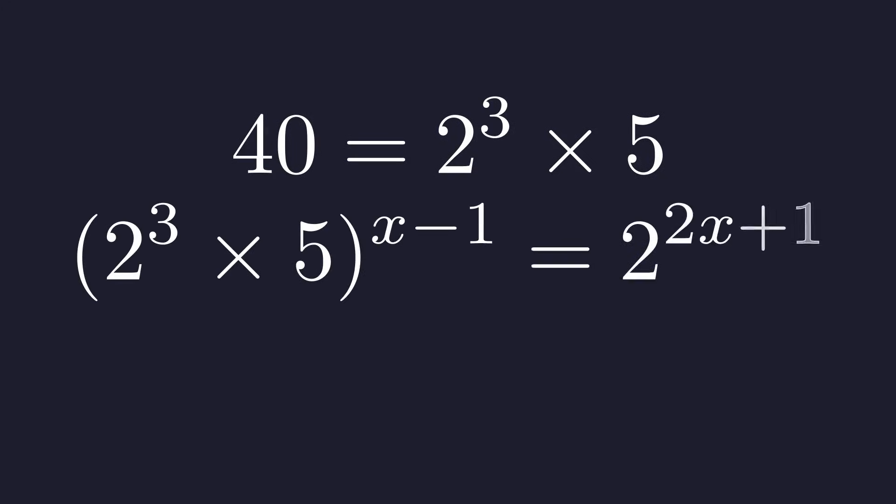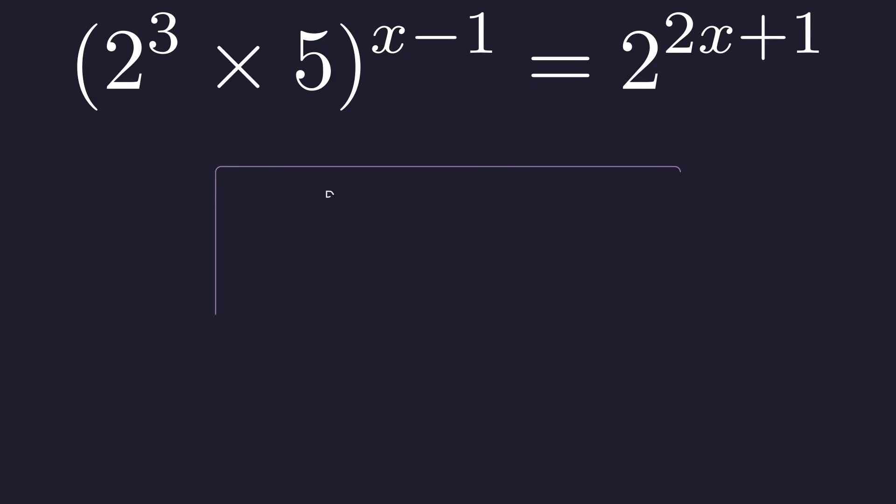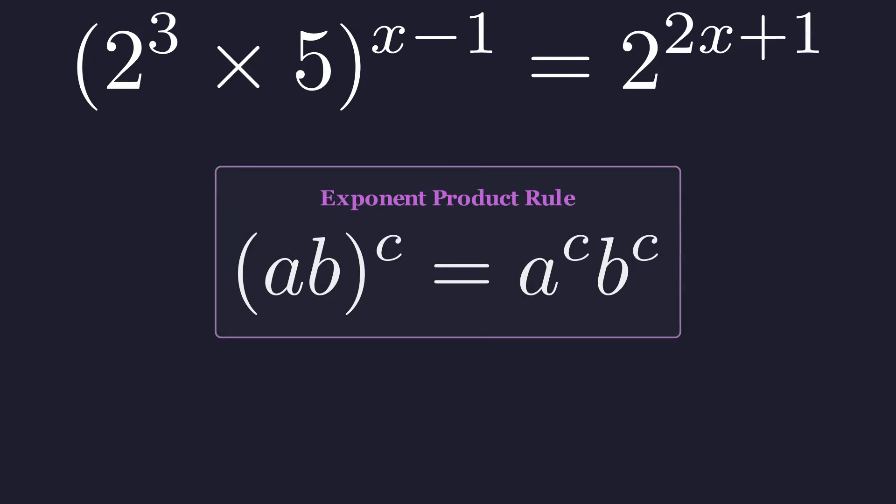Now we substitute this back into our original equation. We use the exponent rule that allows us to distribute an exponent across a product. Let's distribute the exponent x minus 1 to both the 2 cubed and the 5.